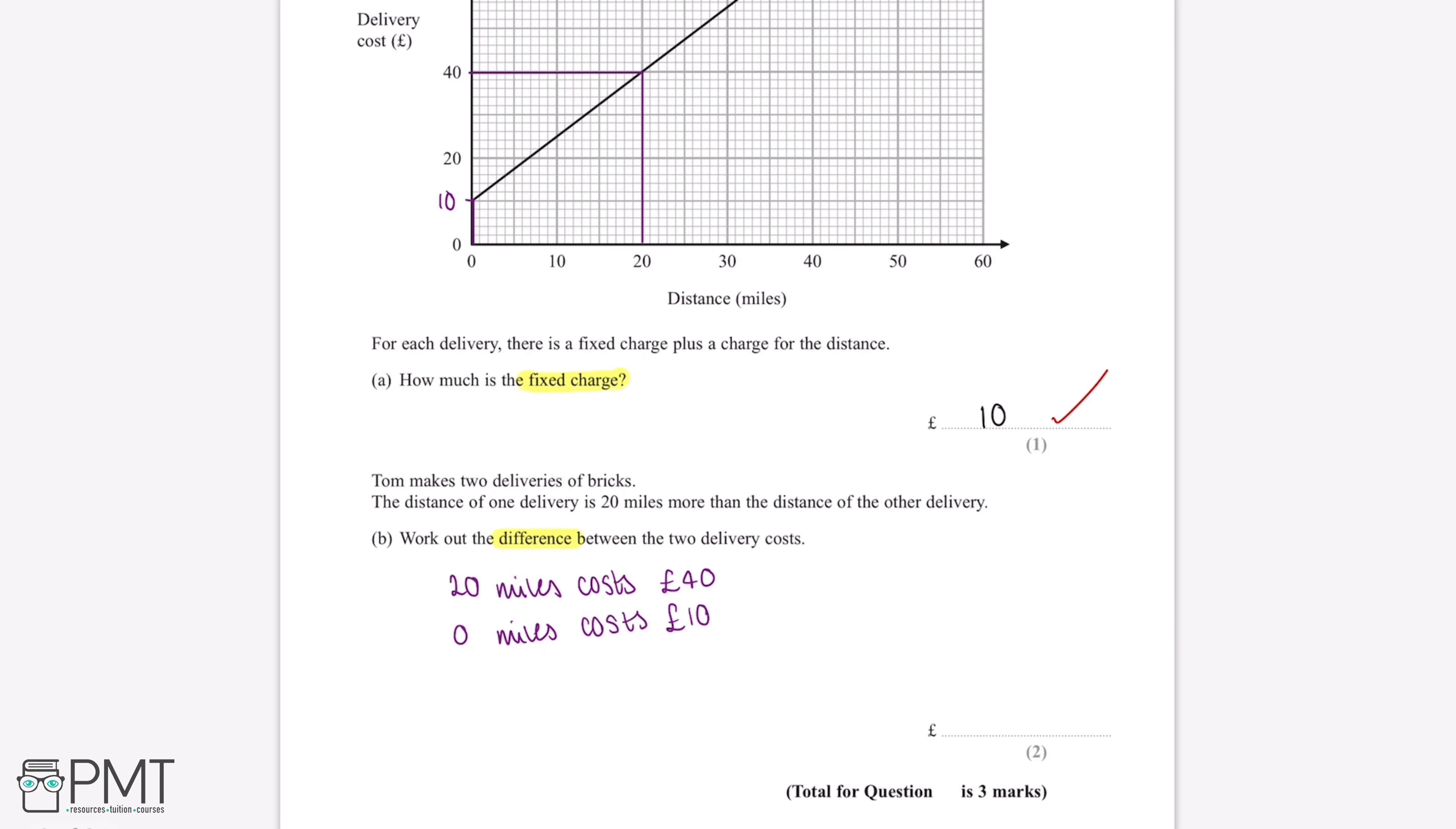Now the final thing we need to do is work out the difference between these two prices. 40 minus 10 gives us an answer of 30 pounds, and this is our final answer.